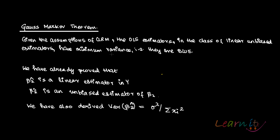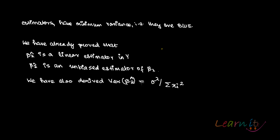Given the assumptions of the classical linear regression model, the OLS estimators — in the class of linear and unbiased estimators — have minimum variance. We've already proved that β̂₂ is a linear estimator in y, that β̂₂ is an unbiased estimator of β₂, and we've derived that the variance of β̂₂ is equal to σ² divided by the summation of xᵢ².